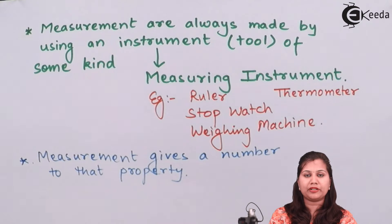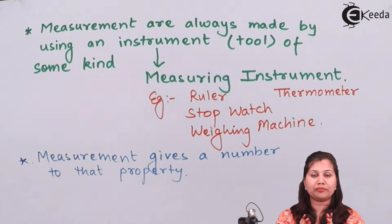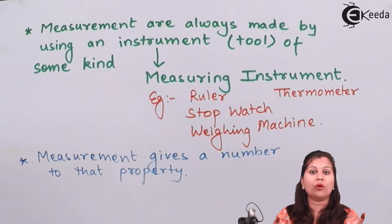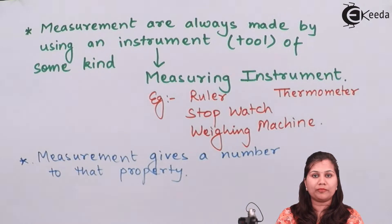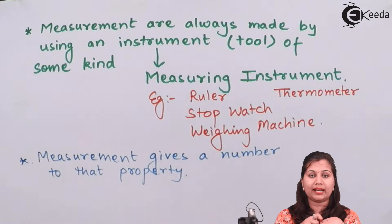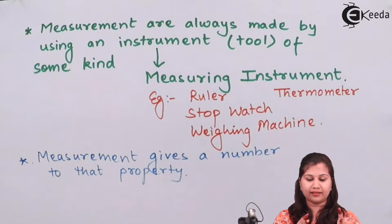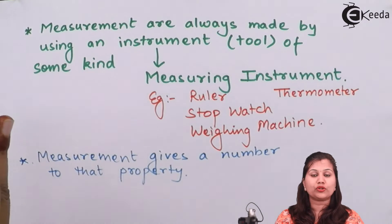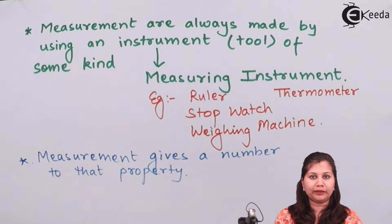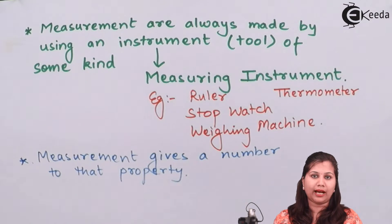Measurement tells us about the property of an object — how long it is, how heavy it is, or how much it can hold. So measurement tells us about the length, weight, and volume of an object. For instance, if we say a scale is 30 centimeters in length, we are giving a number to that property. Measurement gives a number to a property.